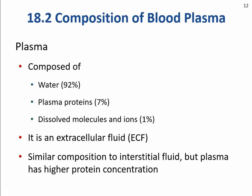Blood plasma is the extracellular matrix of the connective tissue blood, and as all matrices, there is ground substance and proteins. The ground substance in this case is mostly water — it's 92 percent water. That's a number you need to know. When you're dehydrated there is less water; when you are more hydrated there is more water. About 1% is dissolved molecules and ions.